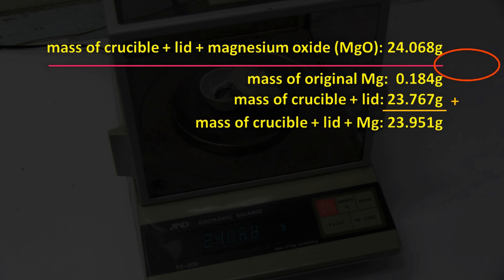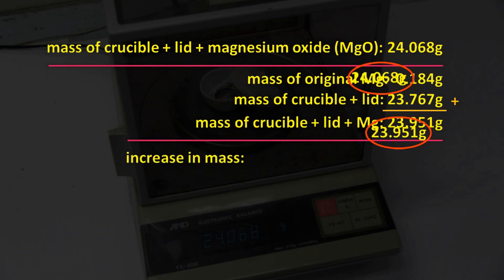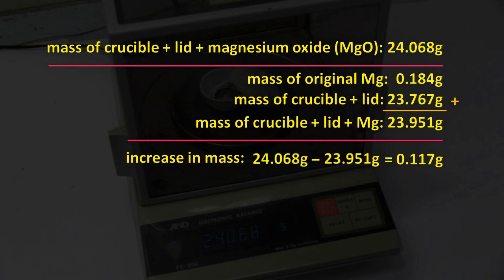The overall mass has increased from 23.951 grams to 24.068 grams. The increase in mass, which we can easily calculate, equals 0.117 grams. This increase in mass has come from all the oxygen atoms that have joined onto the original magnesium atoms.